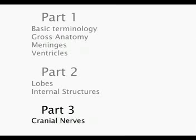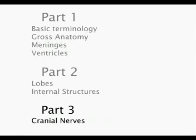So far we've covered part one, which was the basic terminology and some of the gross anatomy of the brain. Part two covered the lobes, internal structures, and their specific functions. Part three is really getting into the cranial nerves, and this is something you're going to have to focus on learning on your own, mainly because in cheap brain dissections you can't really see many of the nerves.